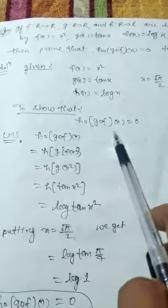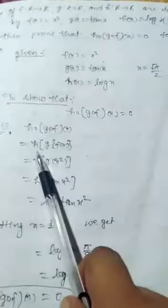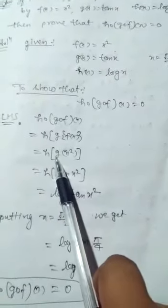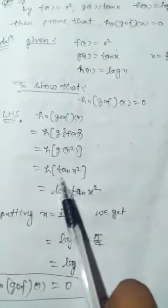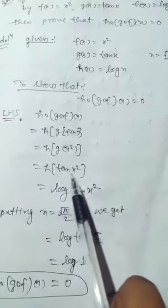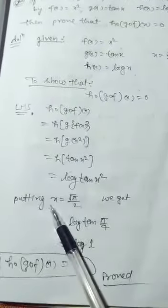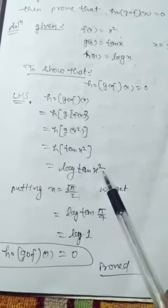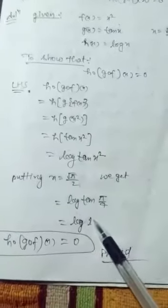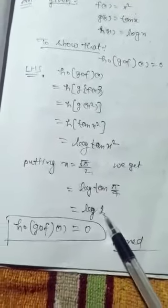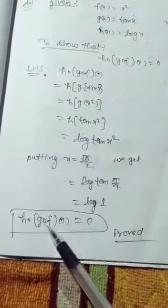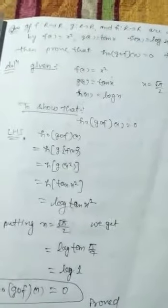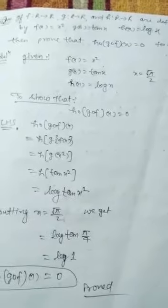We need to show h(g(f(x))) = 0. First, f(x) = x², so g(f(x)) = g(x²) = tan(x²). Then h(g(f(x))) = h(tan(x²)) = log(tan(x²)). Substituting x = √(π/2), x² = π/2 and tan(π/2)... actually we get log(tan(π/4)) = log(1) = 0. Hence h(g(f(x))) = 0 is proved. I hope you have understood; if any problem, you can ask. Thank you.